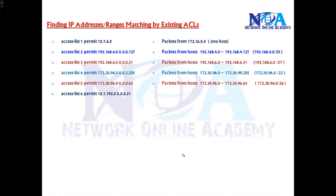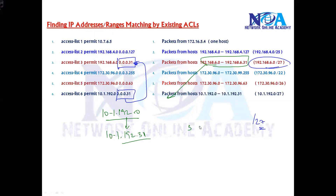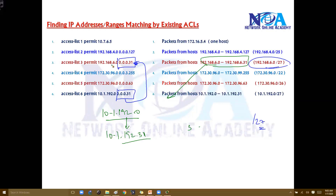One more example with wildcard mask 0.0.0.31. We've already done this — 0.0.0.31 means the subnet is slash 27, and slash 27 means five host bits, giving a range of 32 addresses. The difference here is the IP addresses change: the range is 10.1.192.0 to 10.1.192.31. These two examples are exactly the same structure — only the IPs are different.